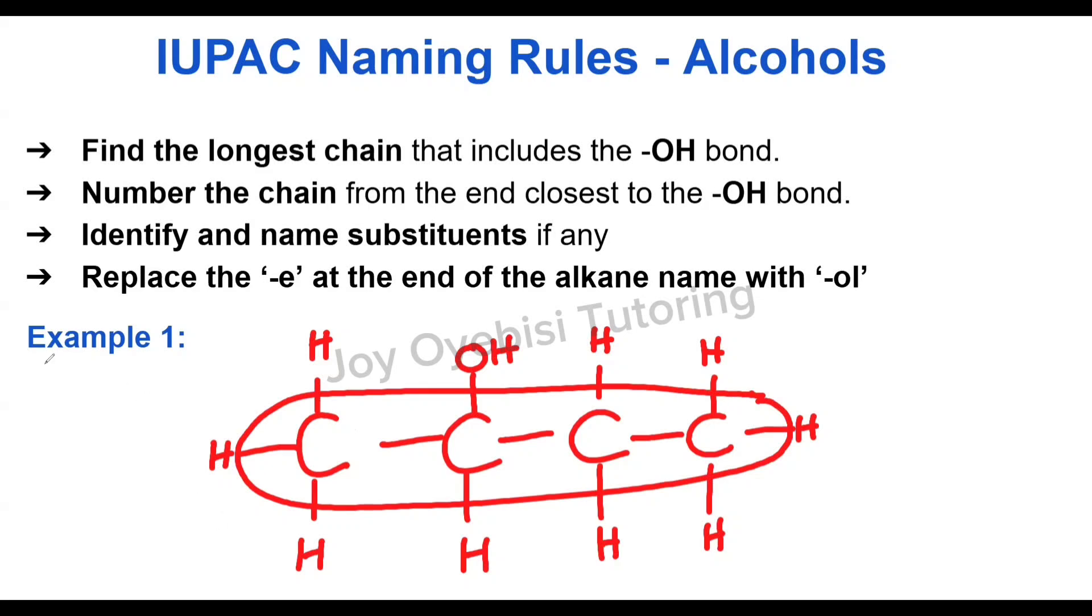Now, we're going to number this chain from the side that gives the OH a lower number. So we're going to go from the left-hand side. So this is carbon one, two, three, and four.